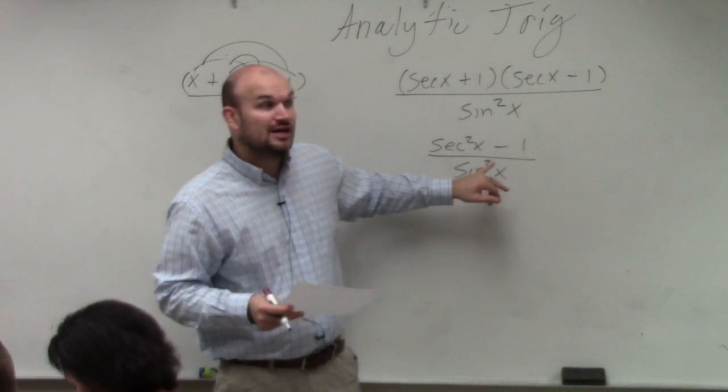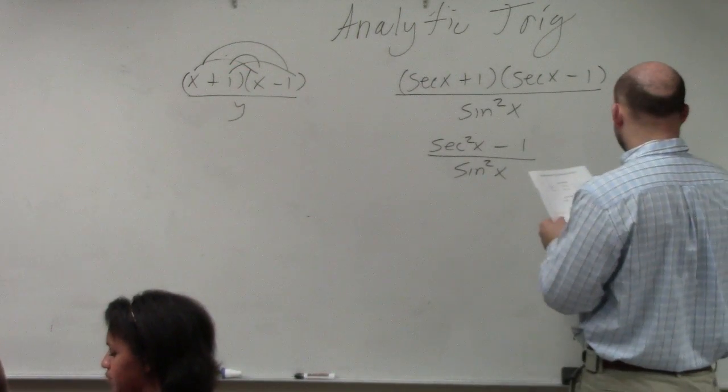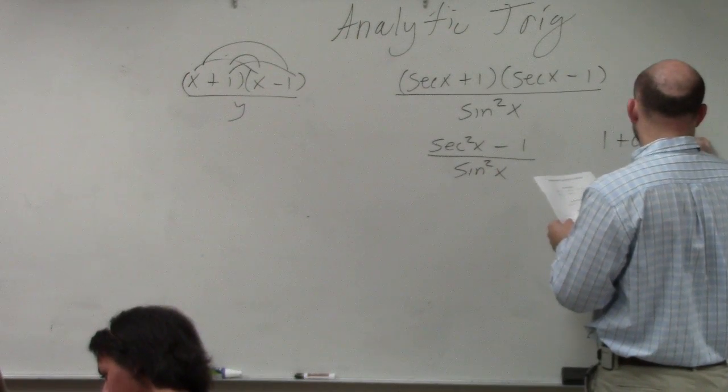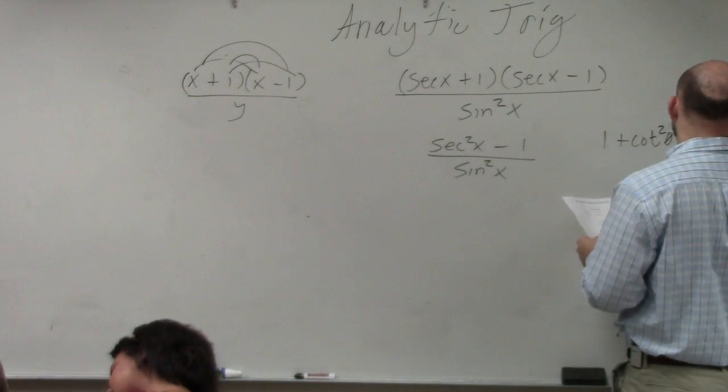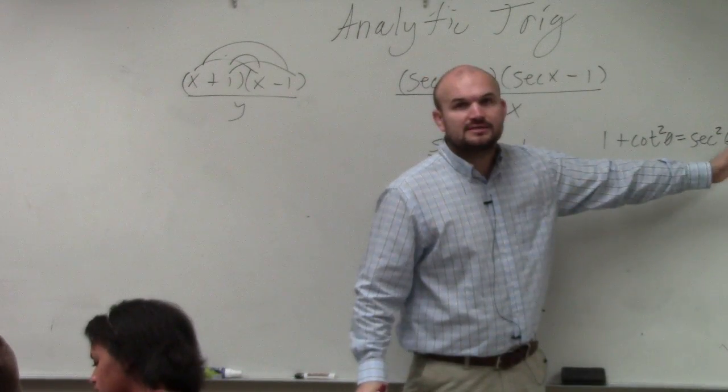Because this is our second Pythagorean identity we're going to go over. And the Pythagorean identity here is 1 + cot²θ = sec²θ. Well, if you guys, I wrote off the board. I'll write over here.